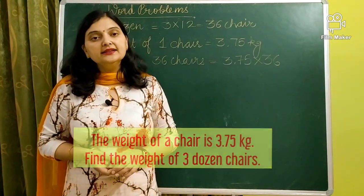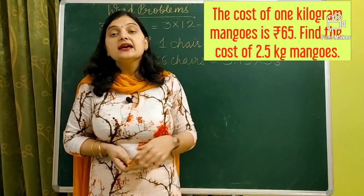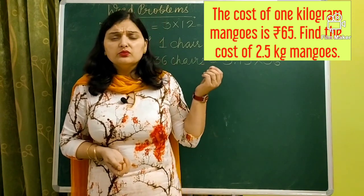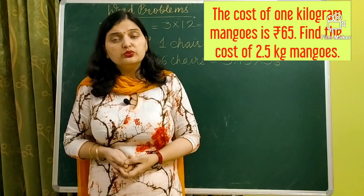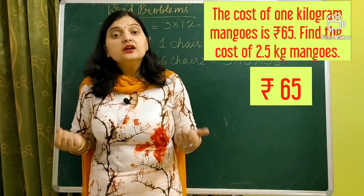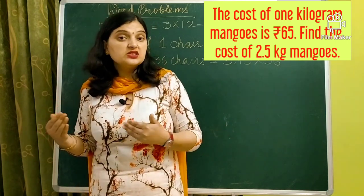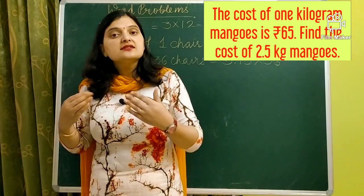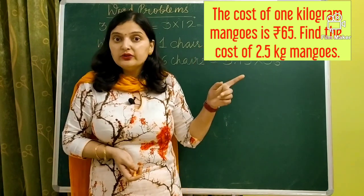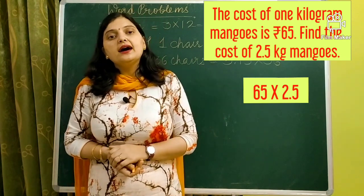Our next question: the cost of one kilogram of mangoes is rupees 65. Find the cost of 2.5 kg of mangoes. Cost of one kilogram is given as 65 and you have to find the cost of 2.5 kg. More quantity means more cost, so we multiply the cost of one kilogram — 65 — by 2.5 kg. After multiplying we will get our answer.